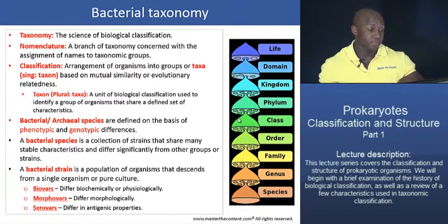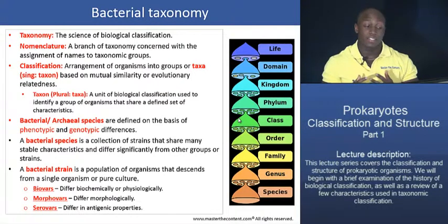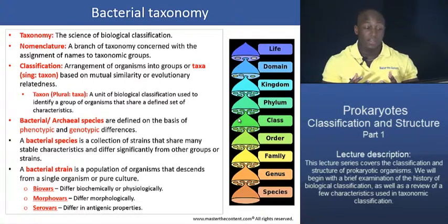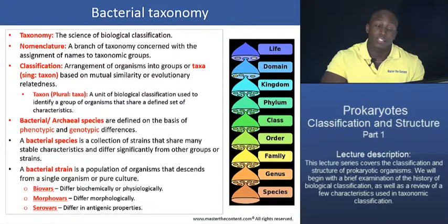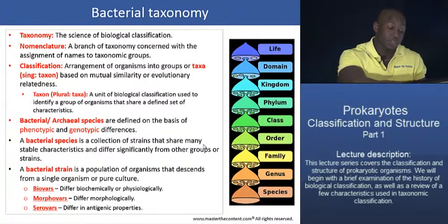It's important for you to distinguish what a bacterial species is and draw a distinction from your regular understanding of the term species. For taxonomists working with higher organisms capable of sexual reproduction, a species is defined as a group of organisms able to interbreed exclusively. However, bacterial cells do not sexually reproduce — they reproduce asexually. So a bacterial species is defined as a collection of strains that share many stable characteristics and differ significantly from other groups or strains.